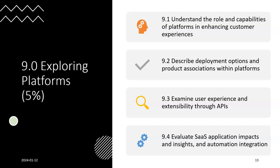The last topic in this domain is evaluating Software as a Service (SaaS) and its application impact, including automation and integration. Nowadays, people prefer licensing and subscriptions rather than downloading full software, due to storage and technical issues. They prefer to buy access for one month, two months, or ten months — essentially a subscription model.